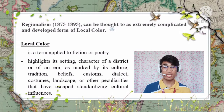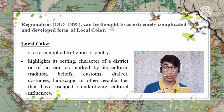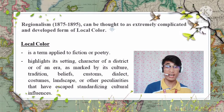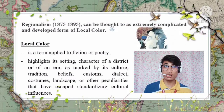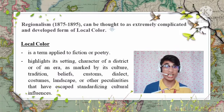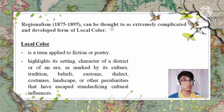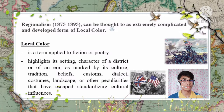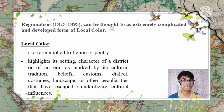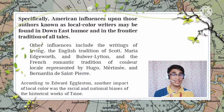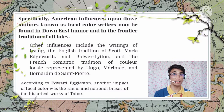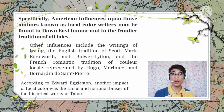Local color is a term applied to fiction or poetry which highlights its setting, being concerned with the characters of a district or of an era, as marked by its culture, tradition, beliefs, customs, landscape, costumes, dialect, and other peculiarities that have escaped standardizing cultural influences. The earliest American writing reflects its local character, but the local color movement came into particular prominence in the U.S. after the Civil War, perhaps as an attempt to recapture the glamour of a past era or to portray the sections of their united country to one another. American influences upon local color writers may be found in Down East Humor and in the frontier tradition of tall tales.